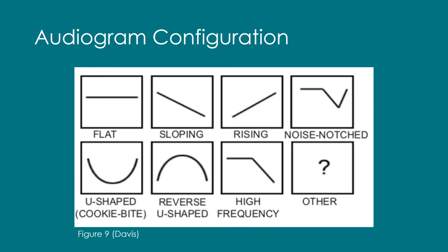All audiograms have a specific configuration or shape. You can see in Figure 9 the most common configurations: flat, sloping, rising, noise notched, U-shaped (also known as cookie bite), reverse U-shaped, and high frequency.